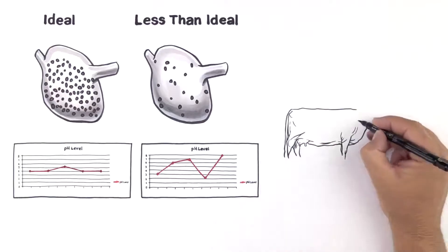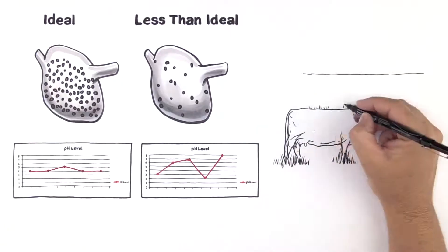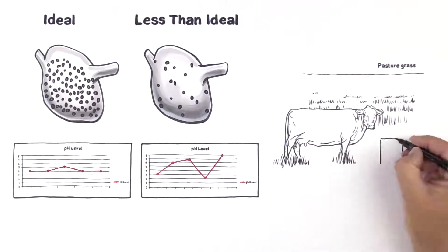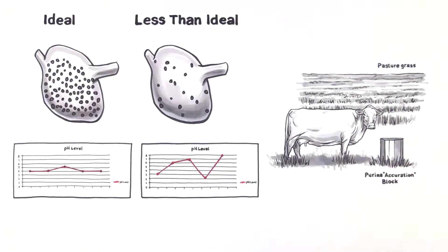The bottom line is, what and how you feed your cows affects which microbes grow, how the feed is utilized, and the nutrients available to the cow.